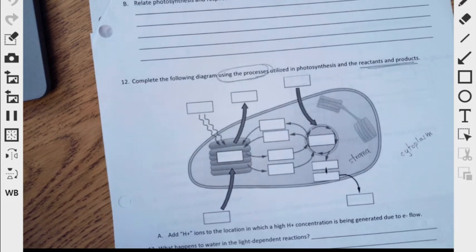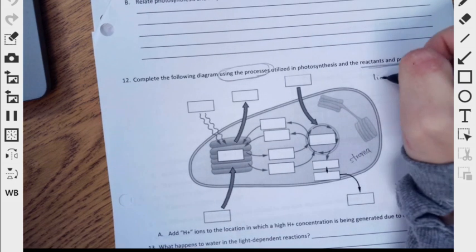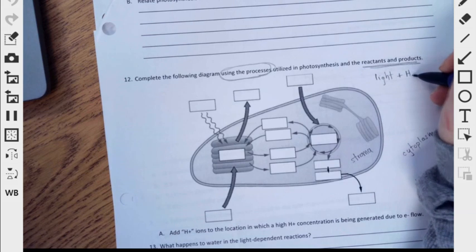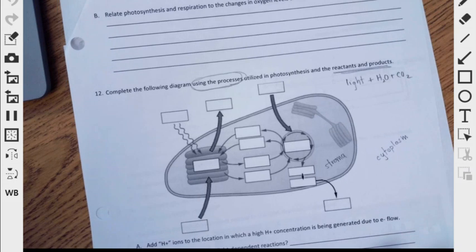I think it's pretty easy to figure out which one's light, right? So let's go ahead and indicate, because it says reactants and products. We need to put in light, we need to put in water, we need to put in CO2. And you need to note that two of these are used in one process. One of them is used in the other process.